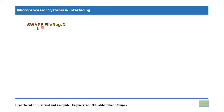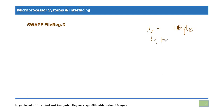SWAPF instruction actually swaps the nibbles. Before we understand SWAPF, we need to know what a nibble is. We know that eight bits of information is called one byte. Similarly, four bits are known as one nibble. We are understanding nibbles because the SWAPF instruction is related to nibbles.